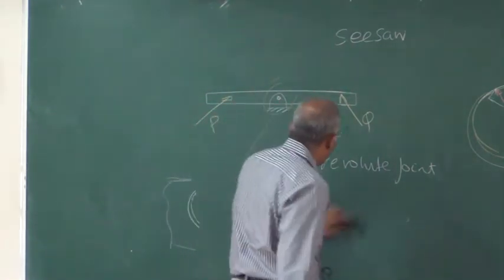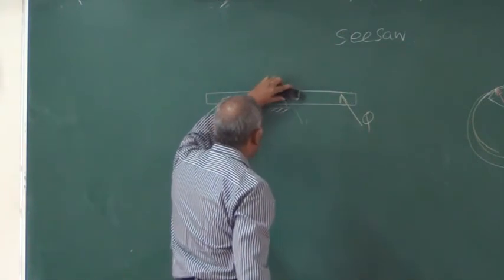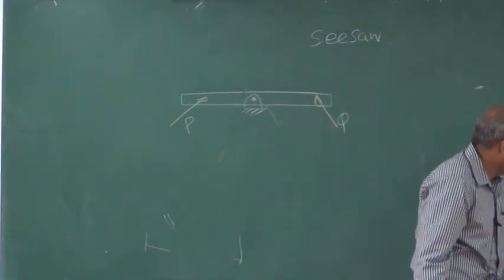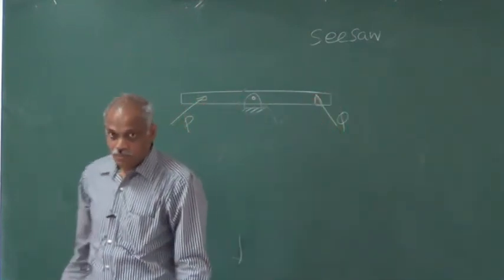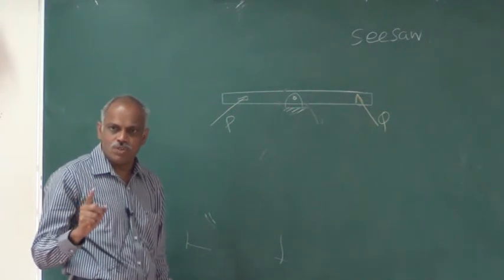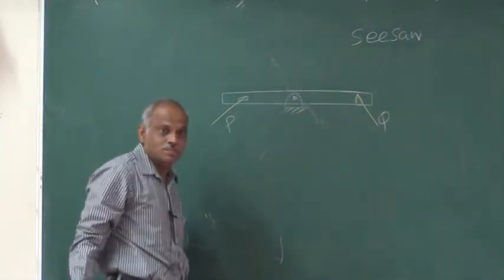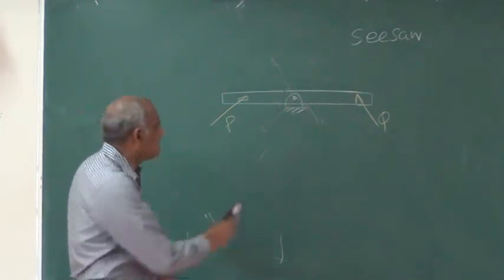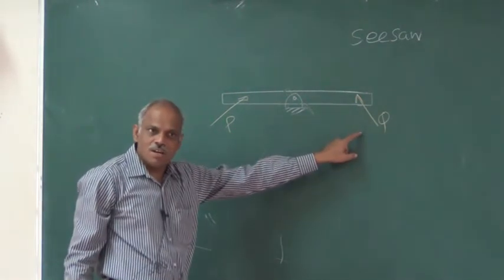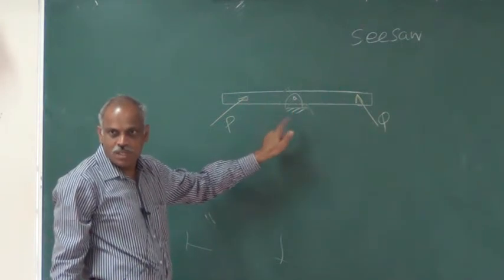Coming back to the seesaw: I have a revolute joint, and it is capable of giving a force in any direction passing through the center. Now, how will you determine the direction? Since the revolute joint can give force in any direction, and there are already two forces in action — P and Q — and the reaction will come from the hinge, these three forces are non-parallel. Therefore, you can use the Theorem of Three Forces.